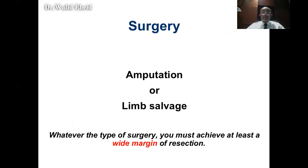Surgery, which is the main topic of today's lecture, could be either amputation or limb salvage. But whatever you do — whether amputation or limb salvage — you always have to achieve what we call a wide margin of resection. So what is a wide margin, and what are the surgical margins we should know?